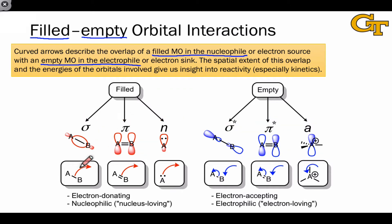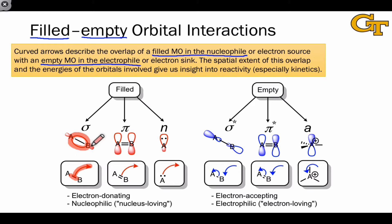For example, whenever a sigma bond is involved as an electron source, we'll see a curved arrow starting at a sigma bond. We can draw — without doing any calculations at all, just by recalling the general shape of a sigma orbital — the shape of the orbital that contains those donated electrons, which is shown here.